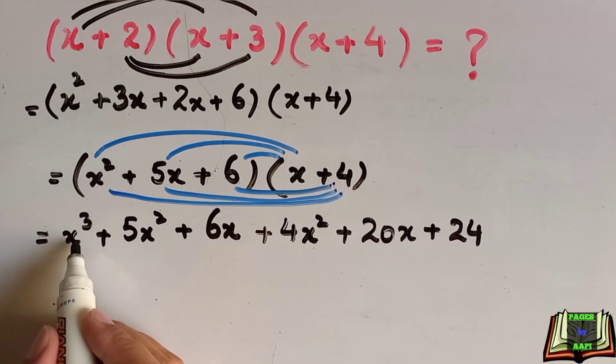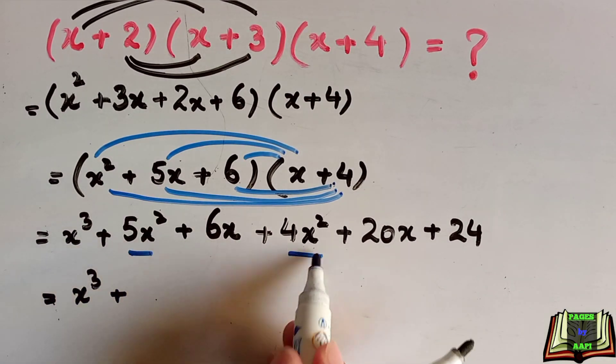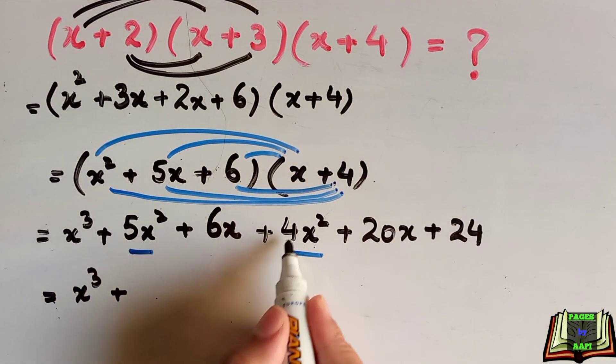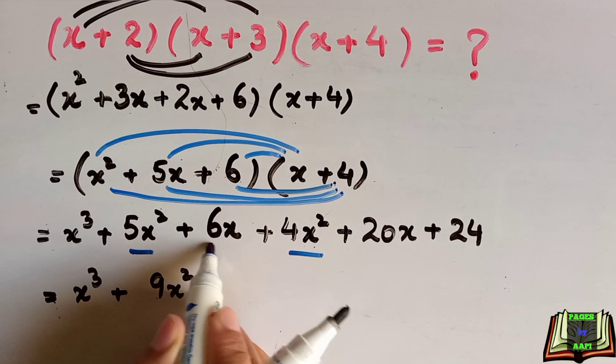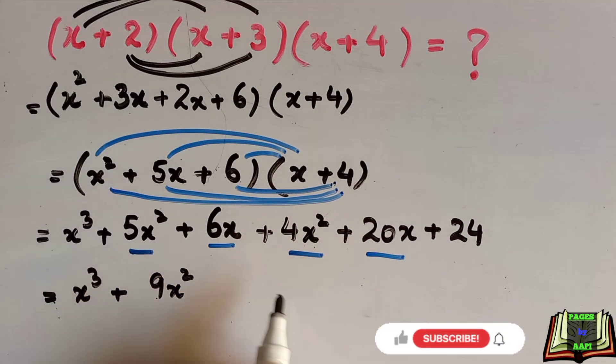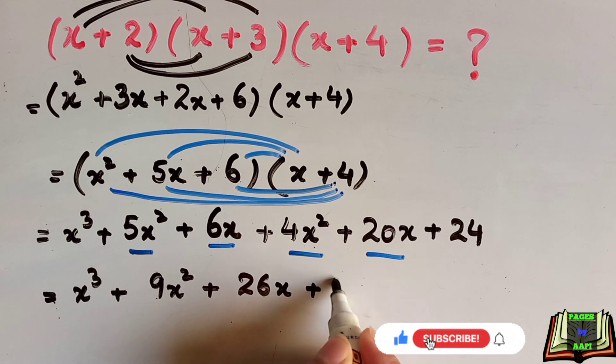This expression will be simplified by adding the same variable. There is only one term of x cube, 2 terms of x square, 5 and 4 will be added, 9x square. 2 terms of x, 6 and 20 will be added, 26x plus 24.